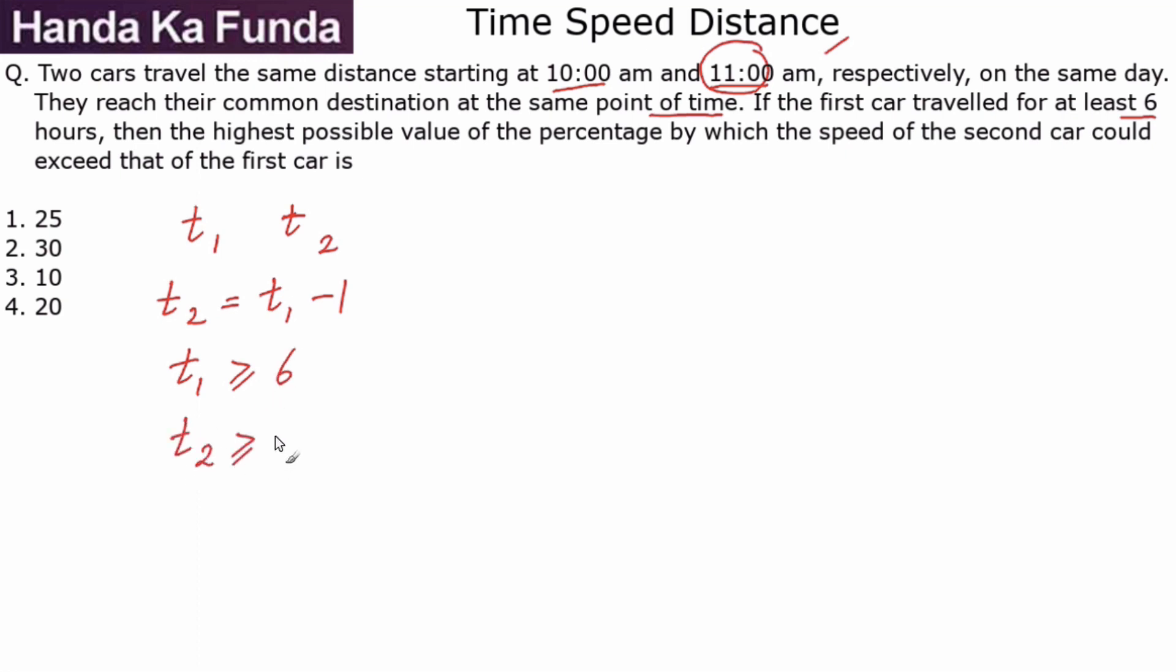Then the highest possible value of the percentage by which the speed of the second car should exceed the speed of the first car. So I need to find out the percentage s₂ is higher than s₁.